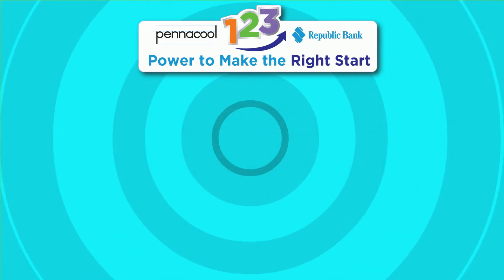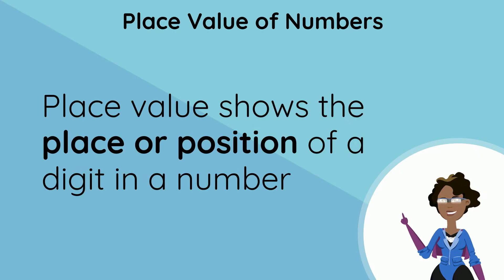That's hundreds, tens and ones. Place value shows the place or position of a digit in a number.